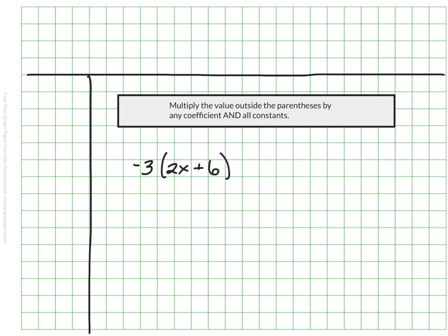We'll use this as our first example. This expression says negative 3 parentheses 2x plus 6, and we need to remember that invisible math, so this is really multiplication. We need to multiply negative 3 by any coefficients and by any constants, which means we need to remember our rules for multiplying integers. A negative times a positive is a negative, a negative times a negative is a positive, and a positive times a negative is a negative. We're adding what we know about negatives to what we already know about the distributive property.